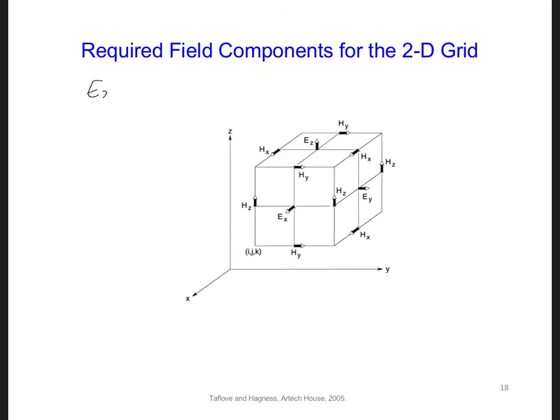So we need at least Ez and Ex field components in our two-dimensional grid. Looking at the Yee grid cell here, can you find a two-dimensional plane that includes both Ez and Ex field components?